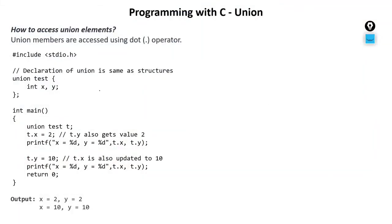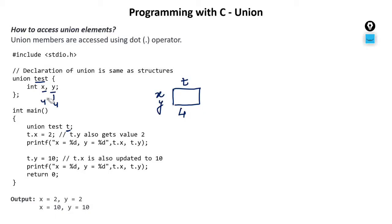We have created a union by the name of 'test' having two variables x and y. In main, I'm creating a variable by the name of 't'. The moment you create this variable, a block will be created — but only one block, one partition. Union takes the maximum size: x gives four bytes, y is four bytes, so a four-byte block is created and shared by both x and y.